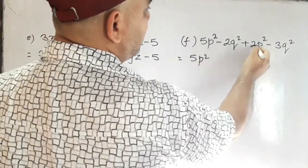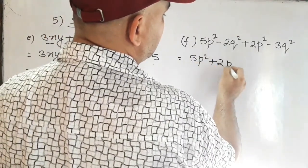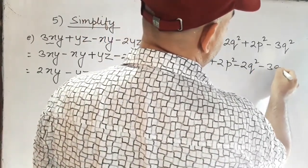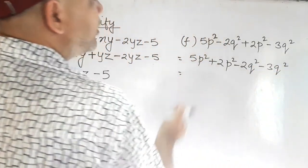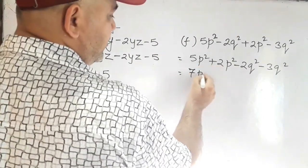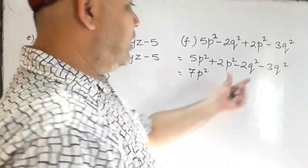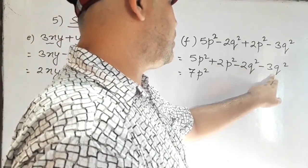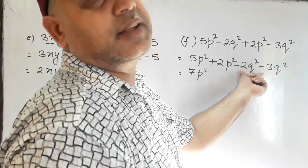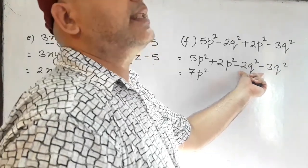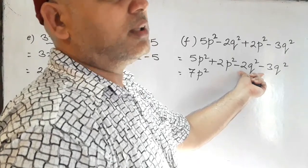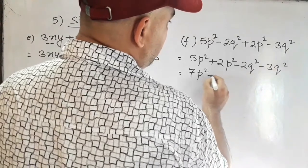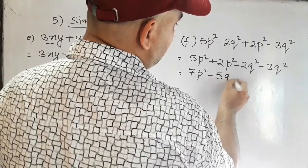Next: 5p squared plus 2p squared minus 2q squared minus 3q squared. Collect the like terms: 5 plus 2 gives 7p squared. For the q squared terms, both have negative signs: minus 2 minus 3 gives minus 5q squared. Result: 7p squared minus 5q squared.